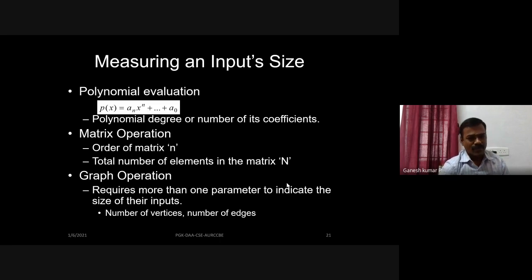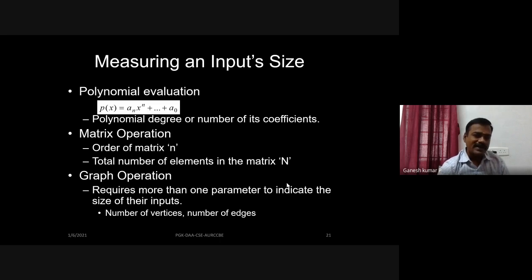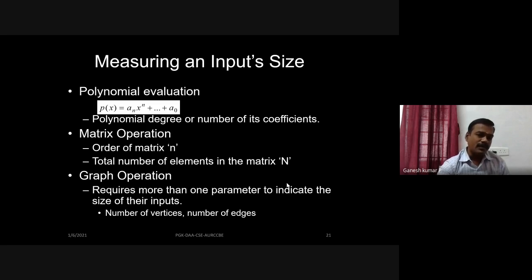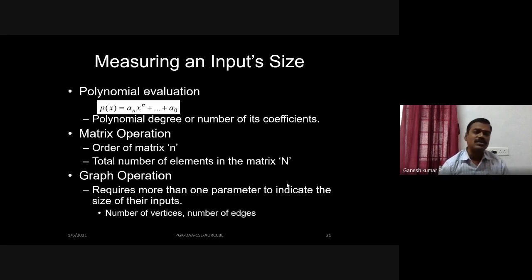For polynomial evaluation, inputs are represented as a polynomial in terms of degree or number of coefficients. For matrix operations, the order of matrix n — the total number of elements — is used. For graph operations, more than one parameter is needed to indicate the size of inputs: you must specify the number of vertices and the number of edges in the graph.